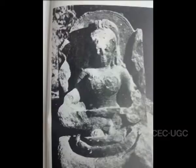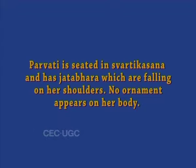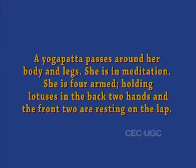She is accompanied by two female figures seated on lotus, and such images go to the early medieval period. The medieval image from Gopeshwar is also interesting. The goddess performs penance. Parvati is seated in Swastikasana and has Jatabhara falling on her shoulders. No ornament appears on her body. A Yogapata passes around her body and legs. She is in meditation. She is four-armed, holding lotuses in the back two hands, and the front two are resting on a lamp.